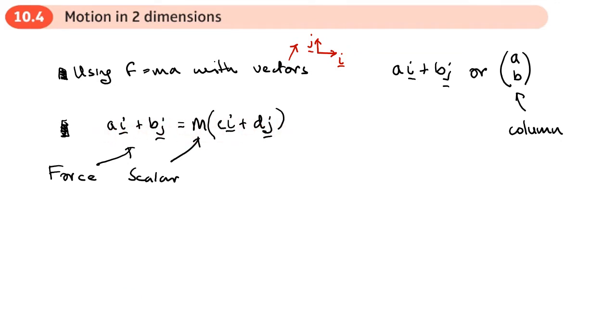It may be easier if we write things as a column. So if we've got something like this, there's our force and then the mass times by the acceleration—just a bit easier to write out. The force is a vector quantity, the acceleration is a vector quantity, the mass will be a scalar and we just multiply this out.